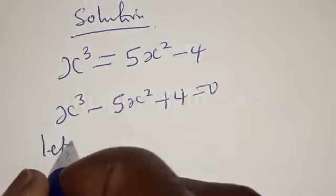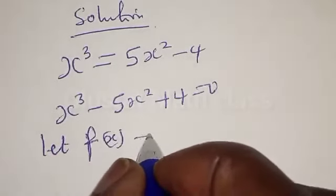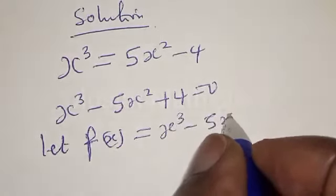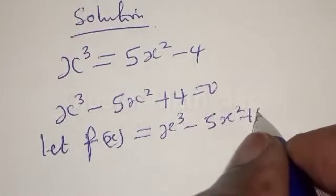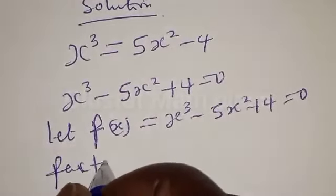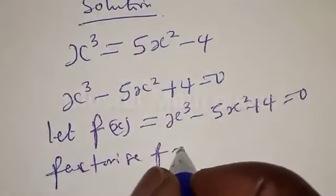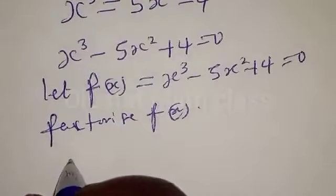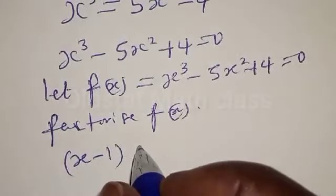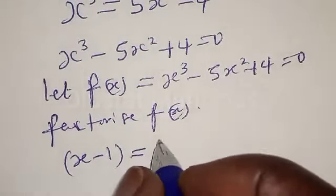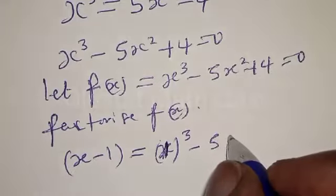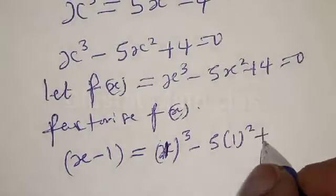Then we say let f of s equal to s³ minus 5s squared plus 4, equal to 0. Now let's factorize f of s. We want to try s minus 1 to see if it is a factor. Then we try s equal to 1.